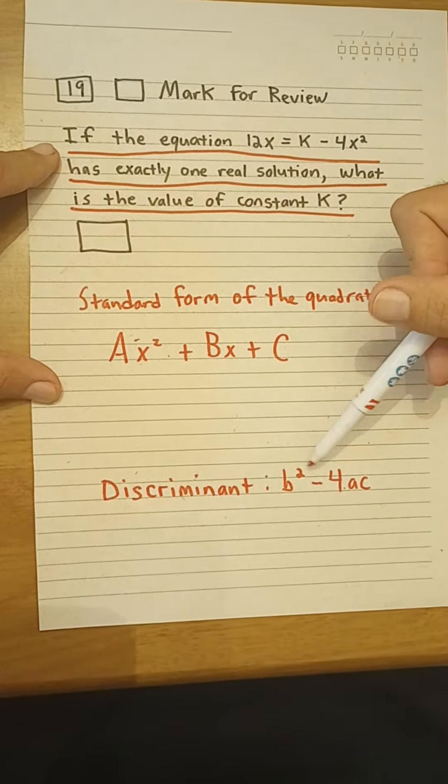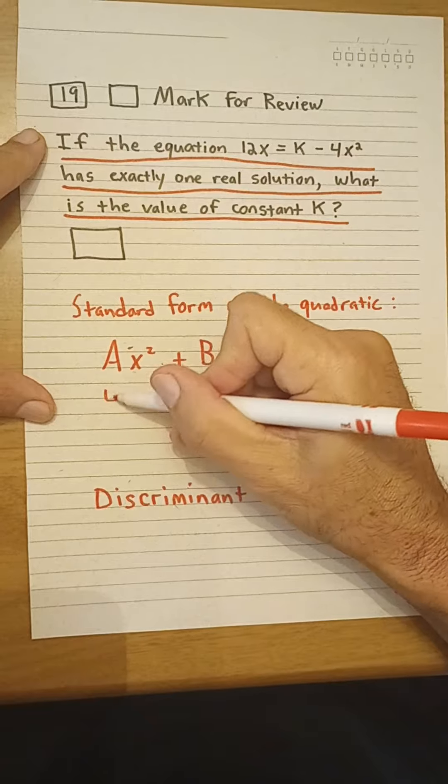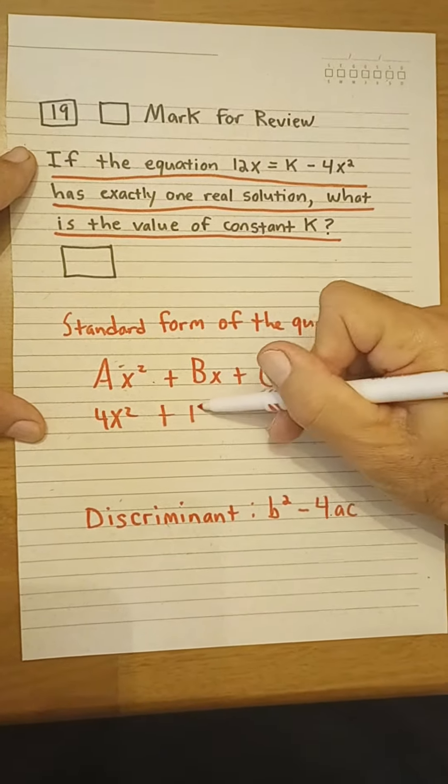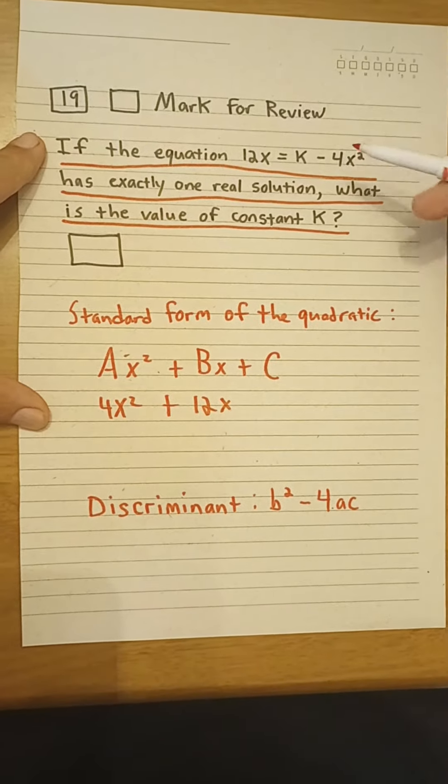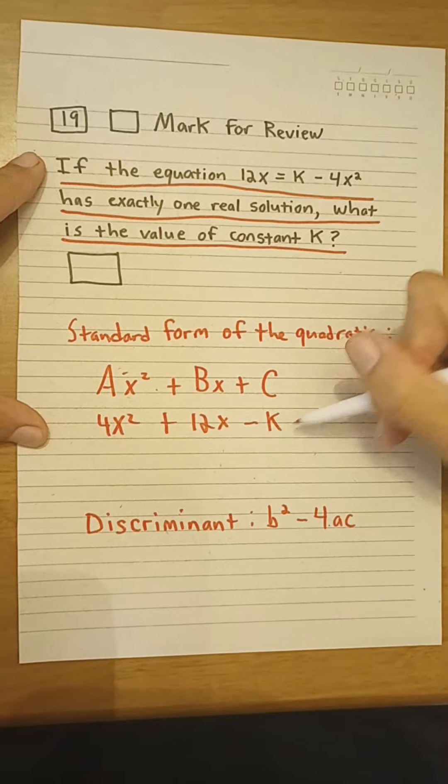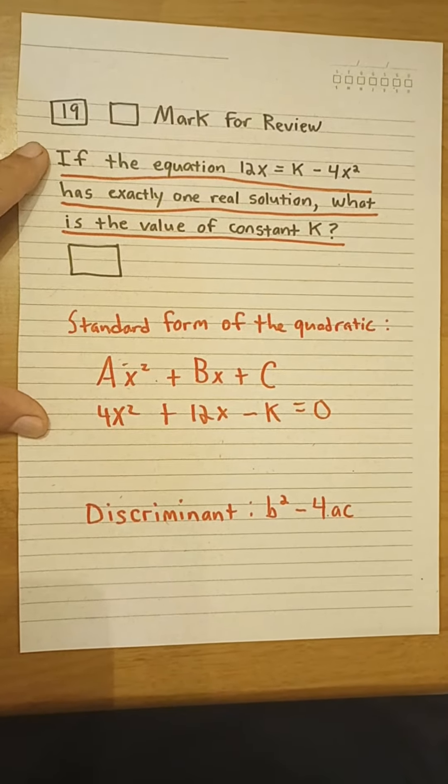So if we put this equation in the standard form, we bring the minus 4x over to the other side. We get 4x squared plus 12x, and then k goes over the other side minus k, and we set this equal to zero.